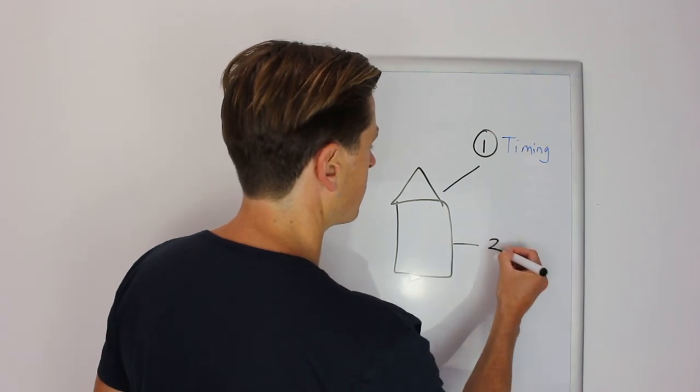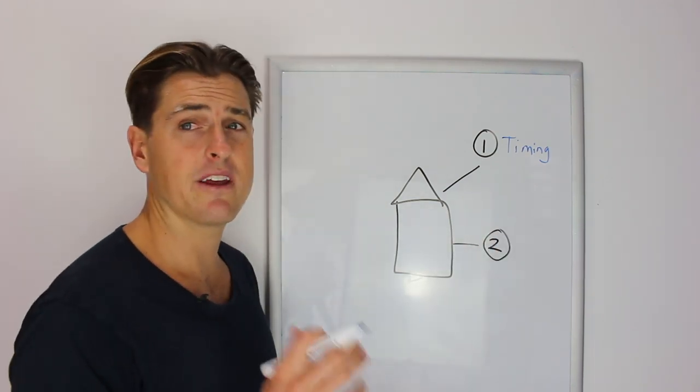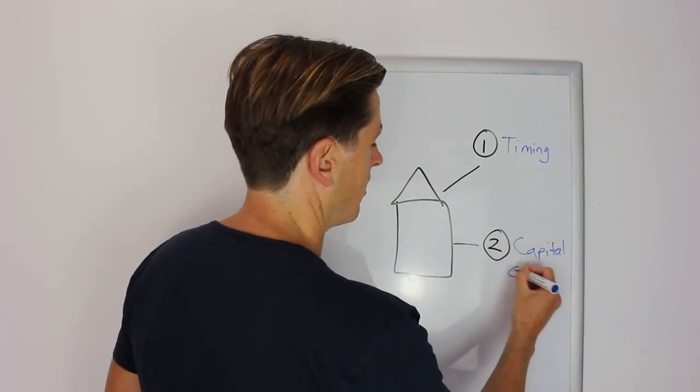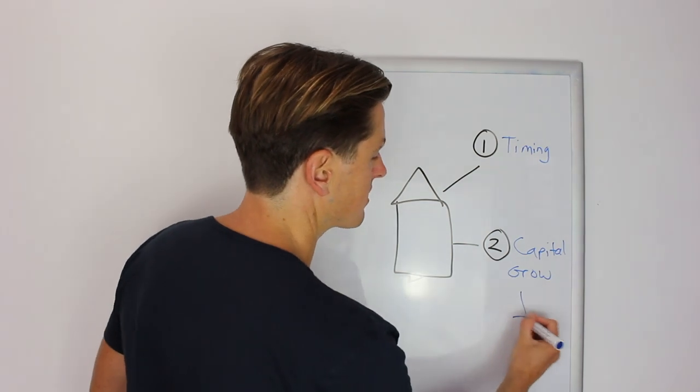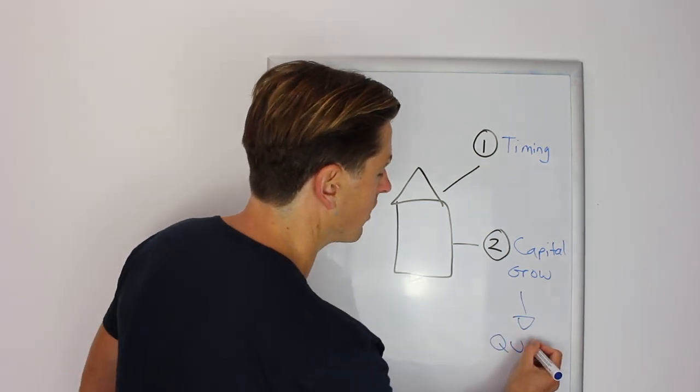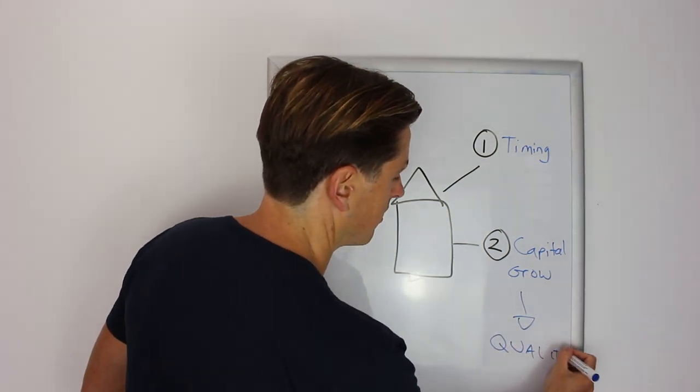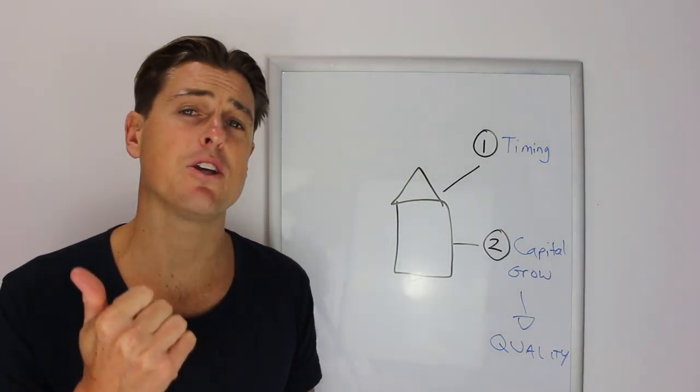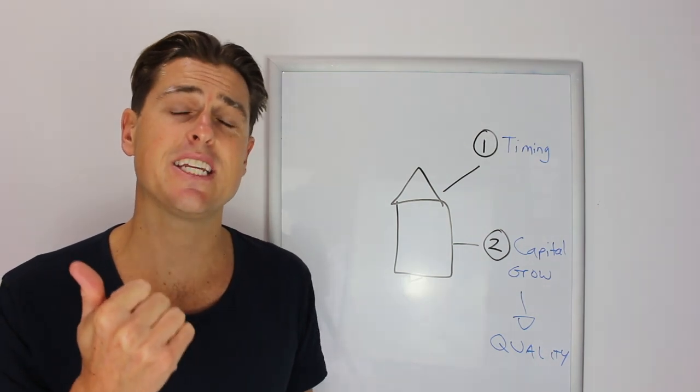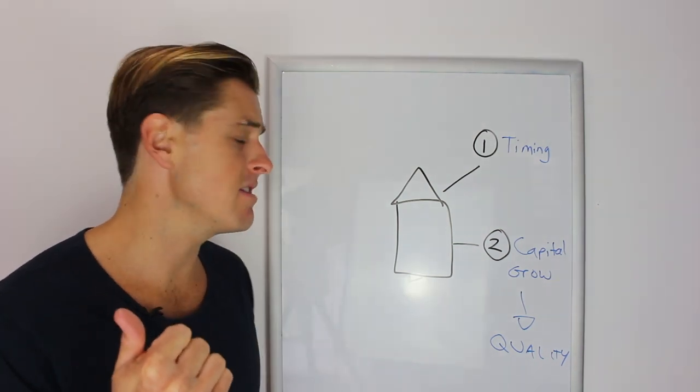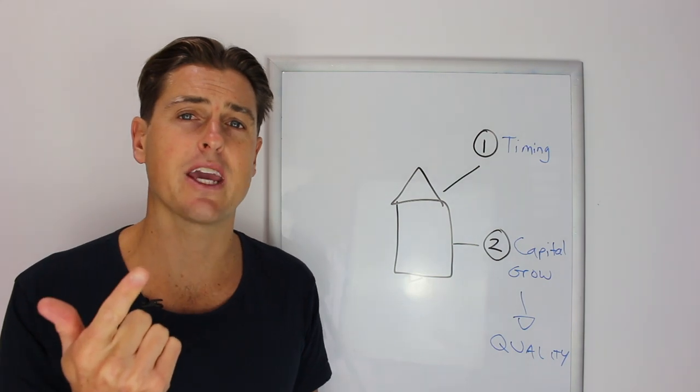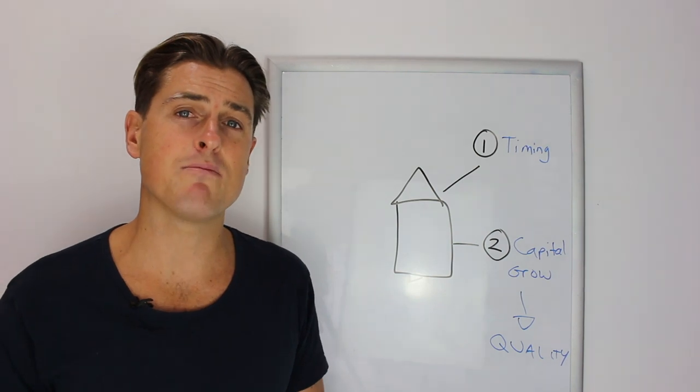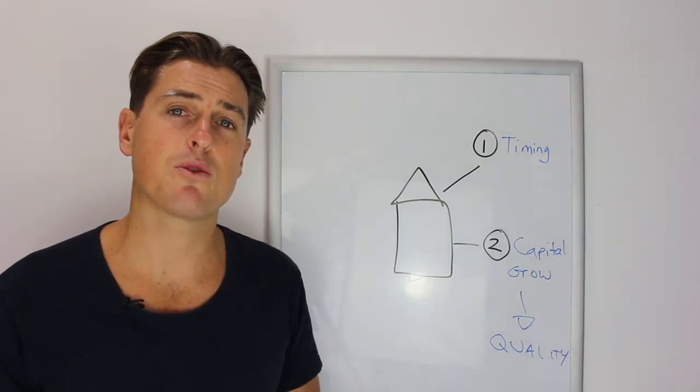The second thing I'm always looking to achieve with any property that I buy for myself is capital growth. I do this from targeting quality property. Quality to me means buying houses because houses have outperformed units in Australia by 96% in the last 20 years.